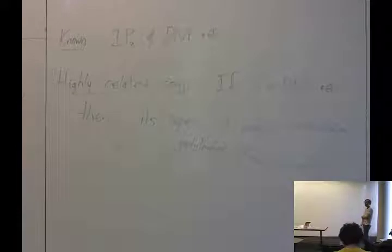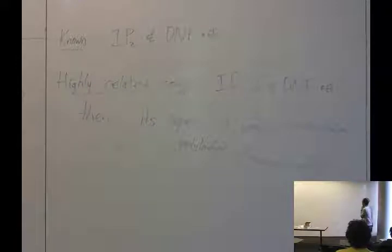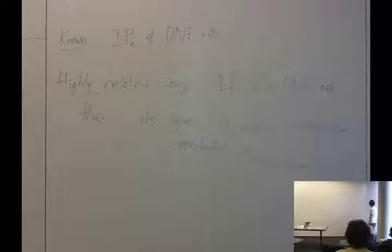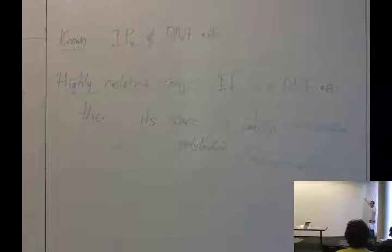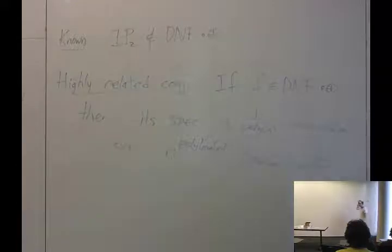A paper that just came out a month ago by Rocco Servideo and Manuela Viola connected this to the matrix rigidity problem. Other than that, it's a circuit lower bound — trying to expand the frontier of circuit complexity classes where we have lower bounds. We know an explicit function not in this class — the mod 3 function — Razborov-Smolensky shows it's not in this class even with parity gates wherever you want. But it's still an interesting circuit complexity problem.